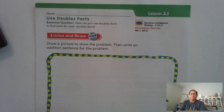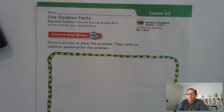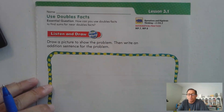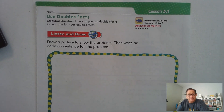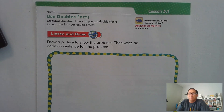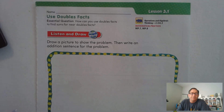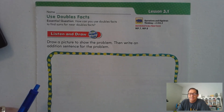Hello, everybody. We're going to start Chapter 3 today of the 2nd Grade Go Math Textbook. We're on page 121. We're going to practice using double facts today to solve problems that are near doubles. How can you use double facts to find sums for near double facts?